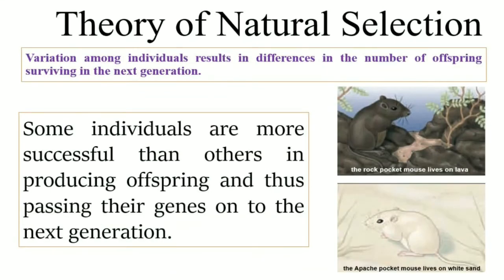On the second condition: if variations exist, some individuals will be more successful at reproducing and leaving offspring, passing their genes on to the next generation. In this figure, you can see that the rock pocket mouse lives on lava, whereas the agouti pocket mouse lives on white sand. This is because each species has characteristics that favor it in that particular habitat. According to the environment, organisms with the best combination of traits are favored by nature.